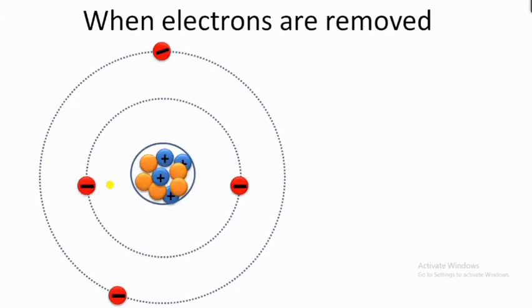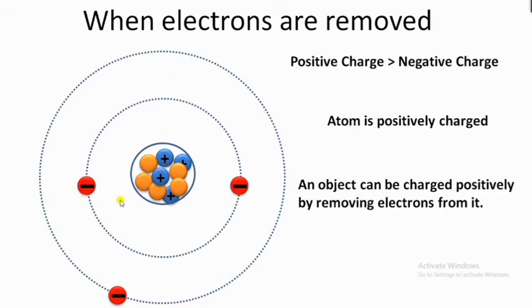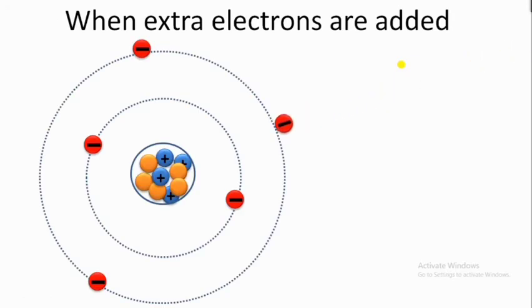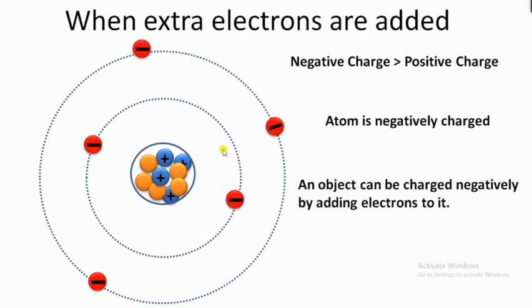When an electron is removed from an atom, the number of positive charges becomes more than the number of negative charges, so the atom becomes positively charged. To charge an object positively, we remove electrons. Conversely, when we give an extra electron to an atom, the number of negatively charged electrons exceeds the number of positively charged protons, so the atom becomes negatively charged. To charge an atom negatively, we give it extra electrons.